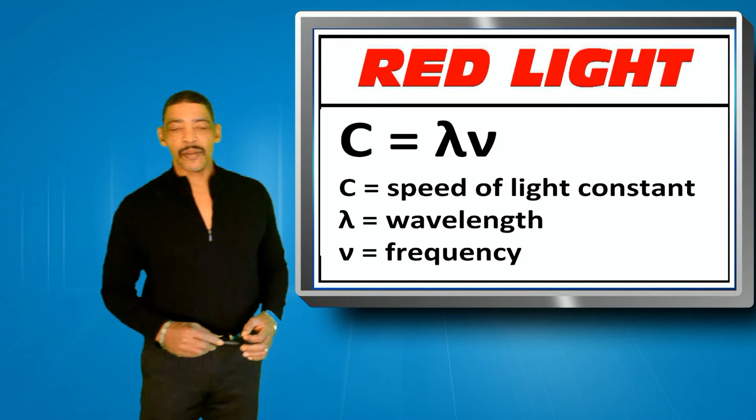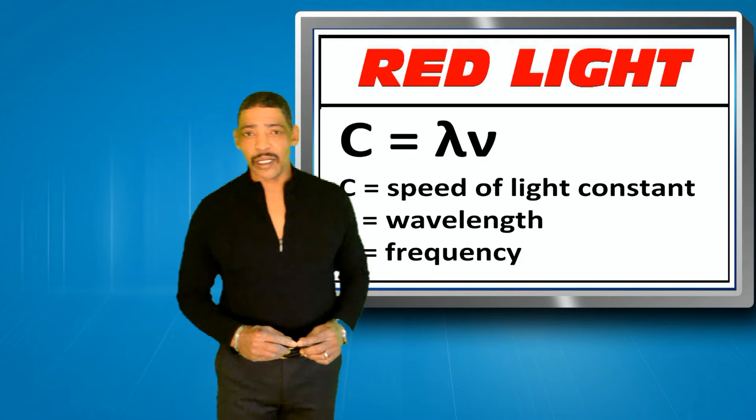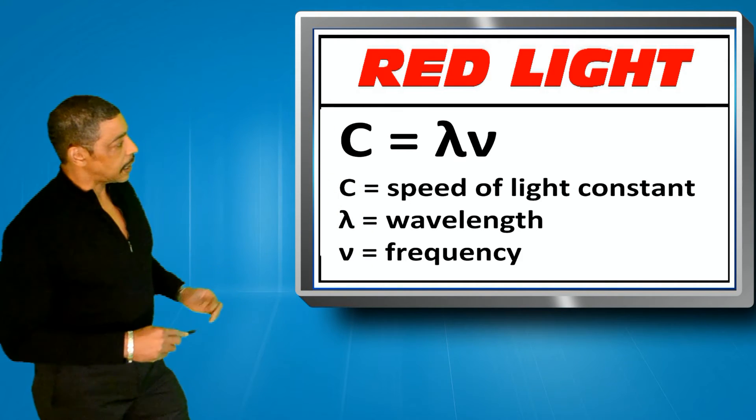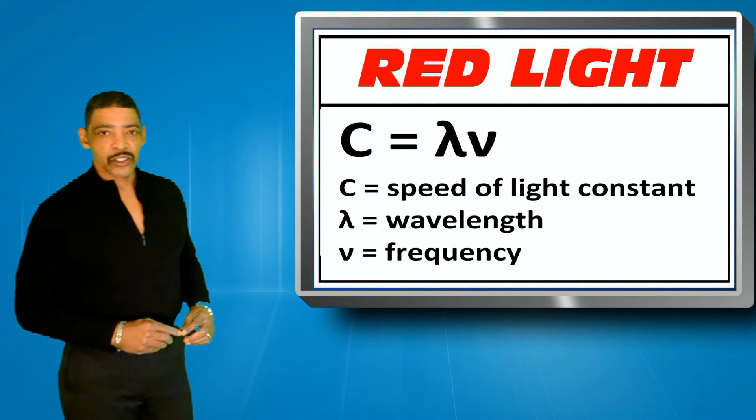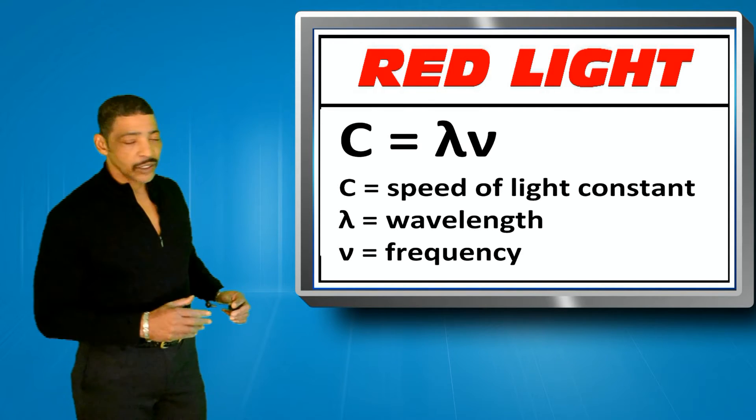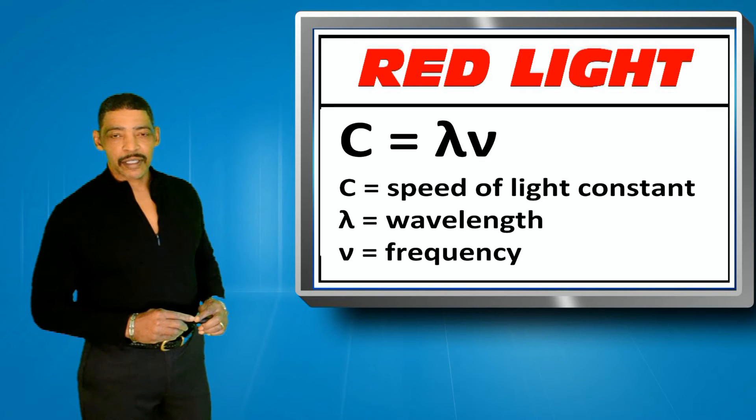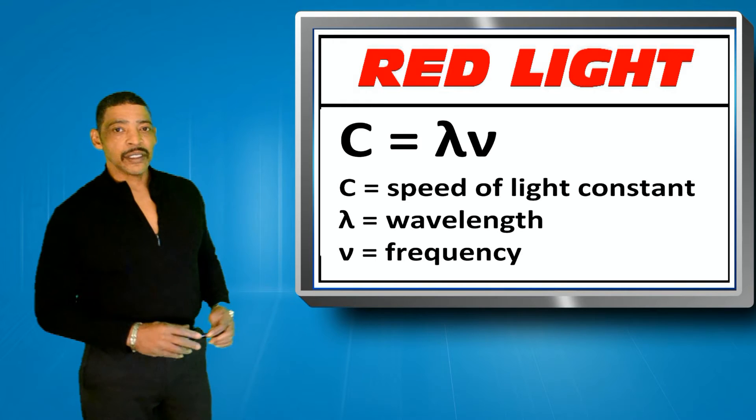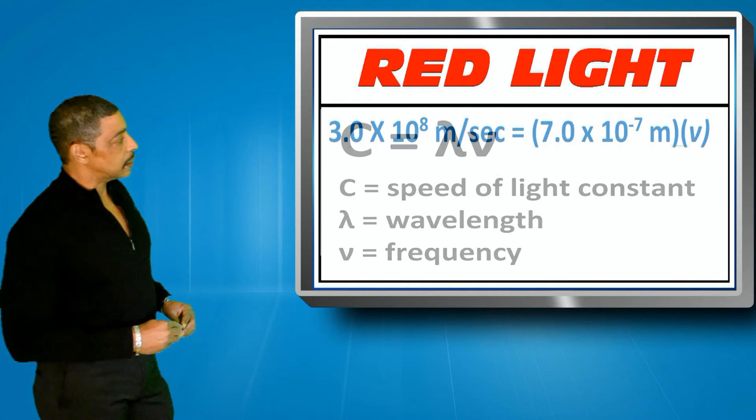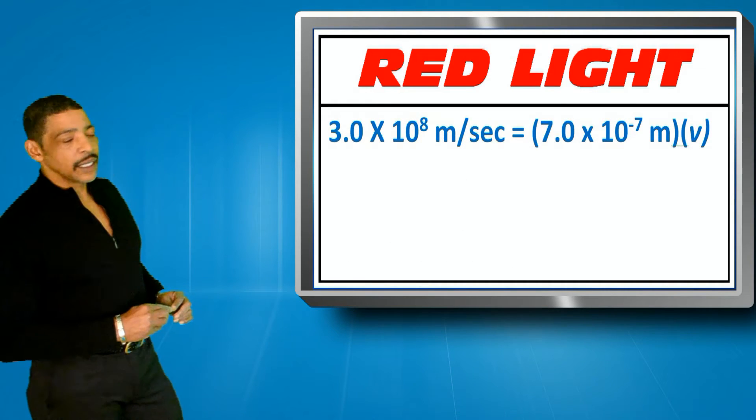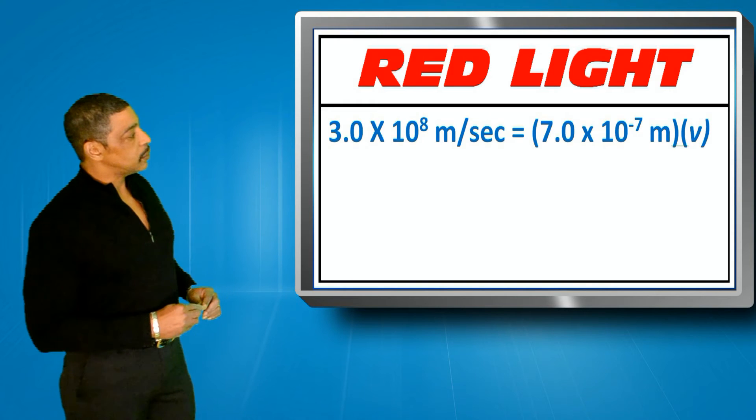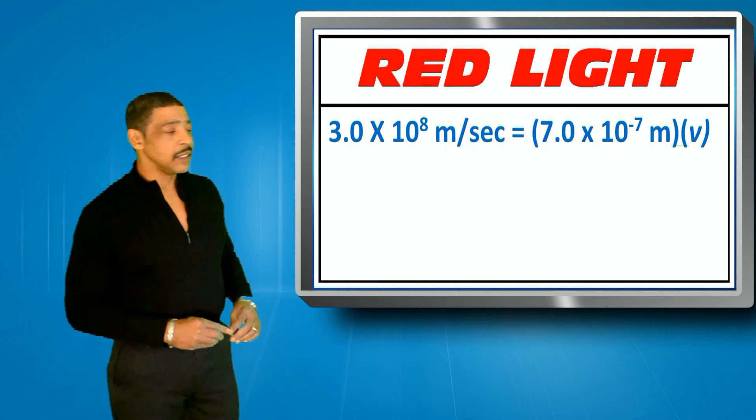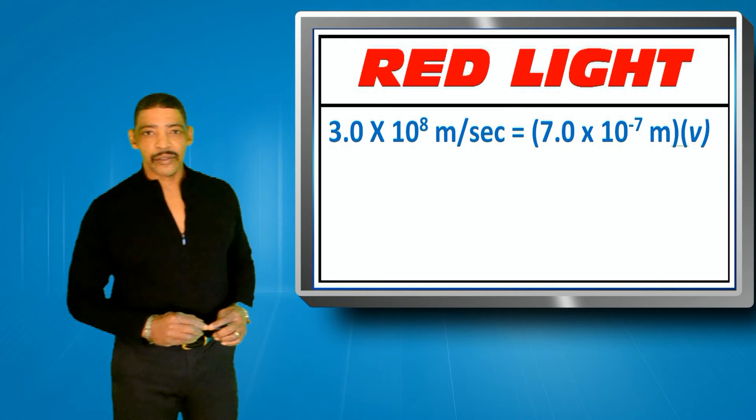In order to determine the energy of a photon of red light, we must first determine the frequency. To do so, we may rely on the speed of light equation, where speed of light c is equal to lambda times nu, or wavelength times frequency. Inputting the data generates the following, where 3.0 times 10 to the 8 meters per second is equal to 7.0 times 10 to the minus 7 meters times nu, the frequency.